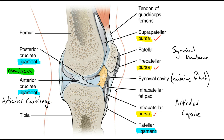The next thing we'll look at are our ligaments. Here is our posterior cruciate ligament, and we have our anterior cruciate ligament. Ligaments hold bone to bone, providing increased joint stability. They keep the bones within reach of each other and limit the amount of movement.